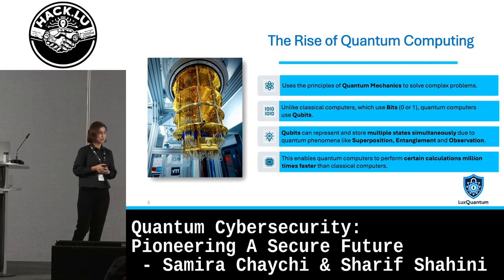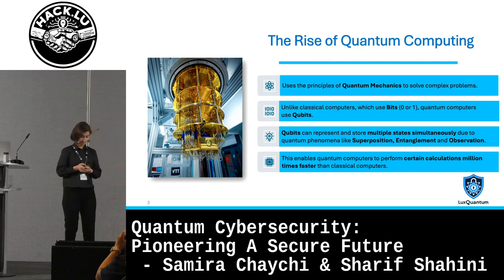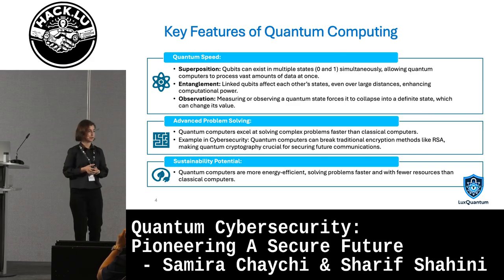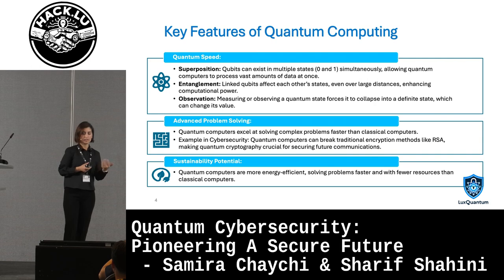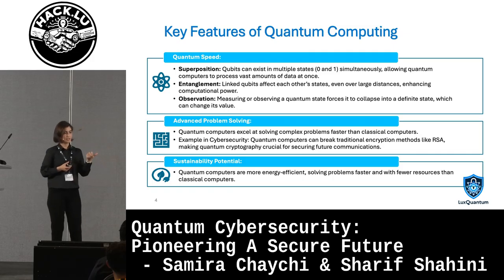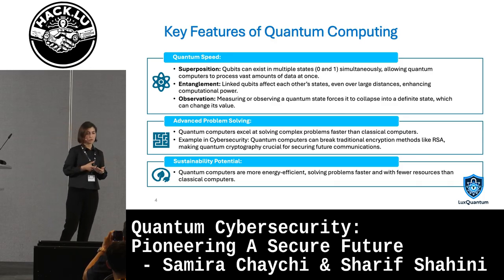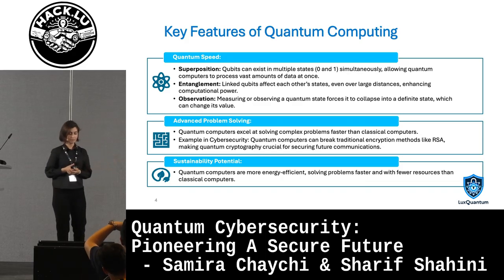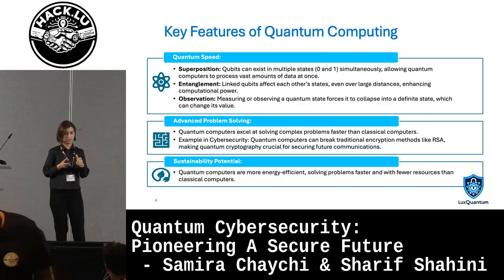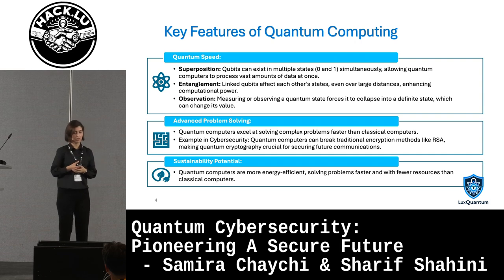This enables the quantum computer to become millions of times faster. Superposition means that the qubit can be zero and one simultaneously, allowing the quantum computer to process a vast amount of data at the same time. Another feature is entanglement: changing one qubit is going to affect and change another qubit, even over a distance, enhancing the power of computation.